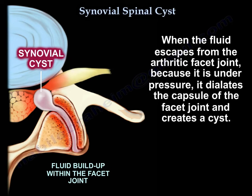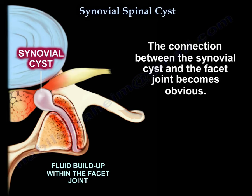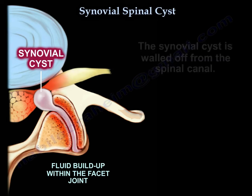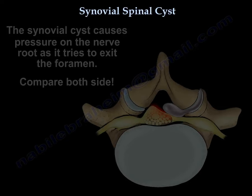When the fluid escapes from the arthritic facet because it's under pressure, it dilates the capsule of the facet joint and creates a cyst. The connection between the cyst and the facet becomes obvious, and the cyst is walled off from the spinal canal.